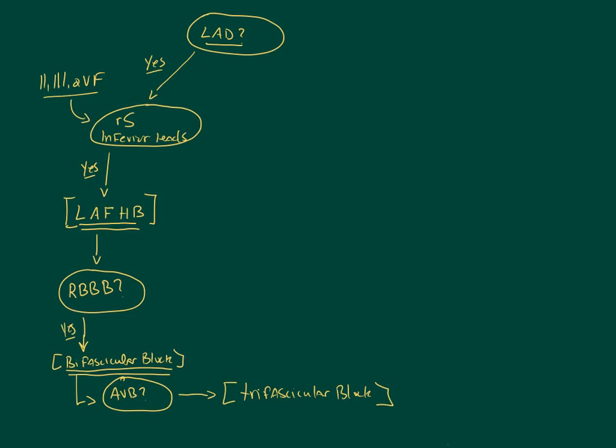And then the last question you ask is, is there any form of AV block? If there is, that gives you a trifascicular block. Even though the AV junction is not technically a fascicle of a bundle branch, this vernacular term is still commonly used to identify the phenomena of a delay of conduction or a block through the junction in addition to a right bundle branch block and one of the two fascicles on the left bundle branch being blocked. So clearly this is a rather tenuous situation when you run into trifascicular block territory. And this may be a patient that will be at risk for deteriorating into some sort of escape rhythm. So you want to be ready to pace that patient if needed.